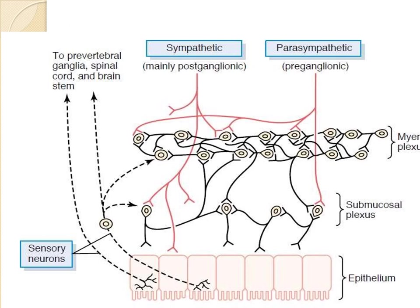The intrinsic nervous system, or enteric nervous system, is controlled by the sympathetic and parasympathetic systems — that is, the extrinsic nervous system. The inner epithelial cells of the gastrointestinal tract have afferent sensory nerves, which supply the intrinsic nervous system and also send signals to the pre-vertebral ganglia, spinal cord, and brainstem.